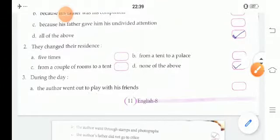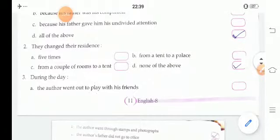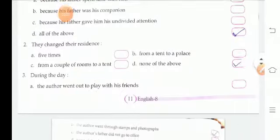Second one is they changed their residence five times from a tent to a palace, from a couple of rooms to a tent, or none of the above. It's none of the above.